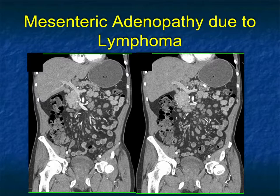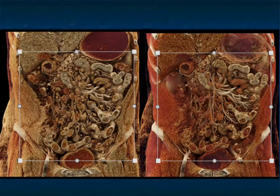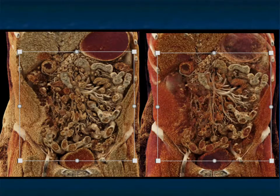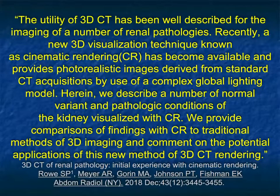Here's a case of lymphoma with large mesenteric nodes — multiple mesenteric nodes. This shows how it looks with cinematic rendering: a really nice look at the bowel, the multiple nodes, the vessels, and everything in combination.